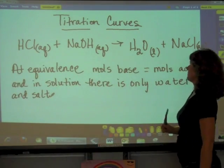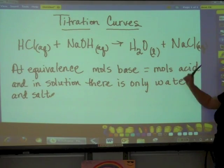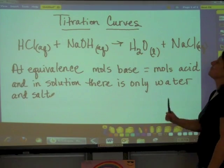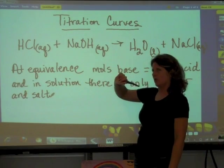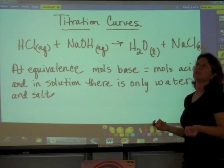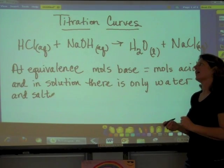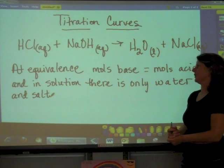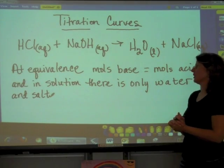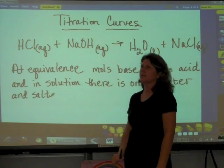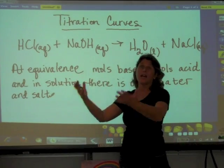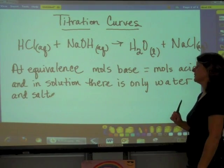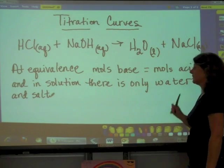So at equivalence, I've got water, sodium ion, and chloride ion — that's all I have. Now if I go over equivalence and begin to add more sodium hydroxide, we used the indicator phenolphthalein: if you got a really bright pink color, you went way over the equivalence point. In that case, not only do you have water and salt, but you also have excess sodium hydroxide. At the equivalence point, moles of base equal moles of acid, and the only thing in solution is water and salt.